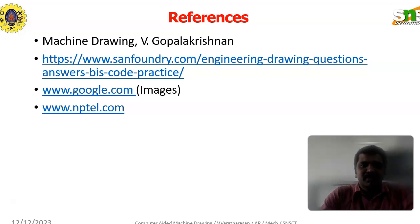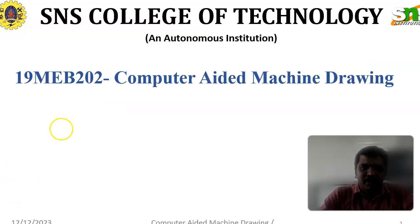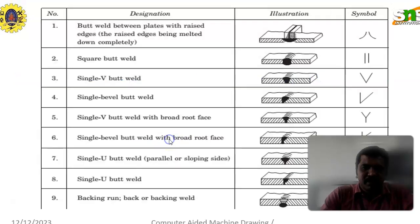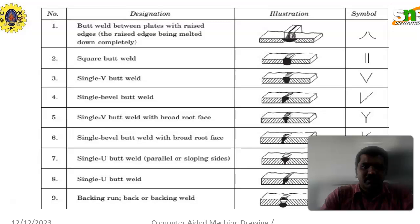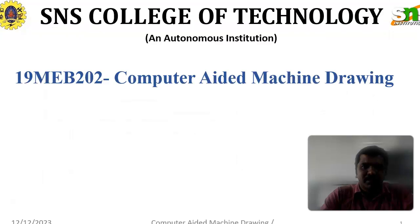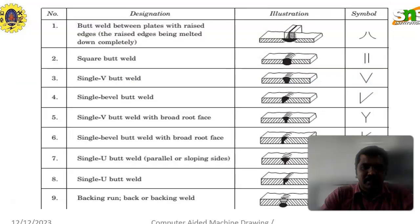These are all the reference books we are using — Dr. V. Gobala Krishna's machine drawing book and also Google images. So here, the continuation of the previous lecture series in the abbreviation part. Here the illustration of the symbols — how the symbol will be illustrated with symbolic representation will be seen in this PPT presentation slide.